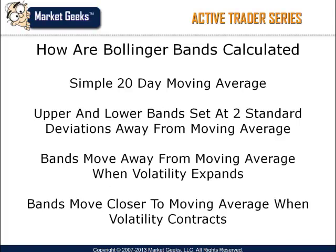For those of you who are not familiar with Bollinger Bands, it's rather a simple indicator. You begin with the 20-day simple moving average of the closing prices. The upper and lower bands are then set to standard deviations above and below the moving average. The bands move away from the moving average when volatility expands and move towards the moving average when volatility contracts. For today's demonstration, we will rely on the standard settings to keep things simple.